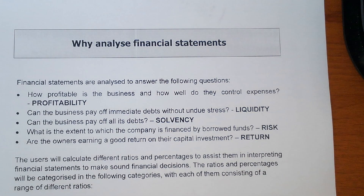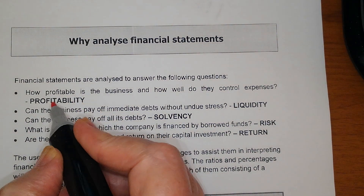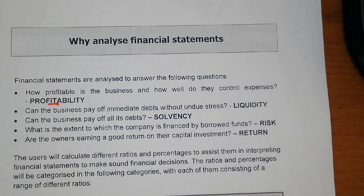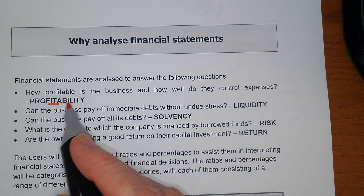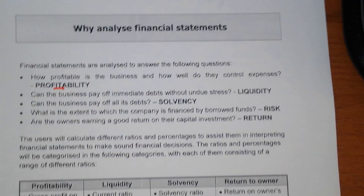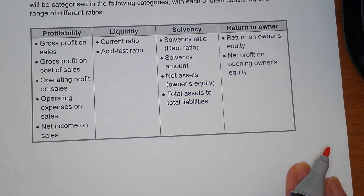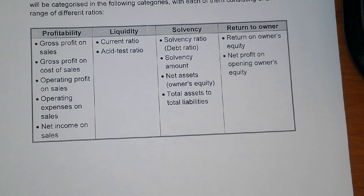How profitable is this business? How can they control these expenses? For profitability, we get that information from the income statement. We will take the income statement and do various calculations — for instance, gross profit on sales: sales less cost of sales equals gross profit.